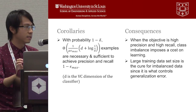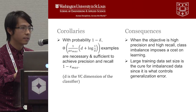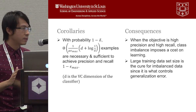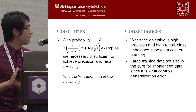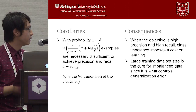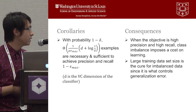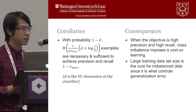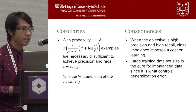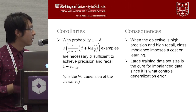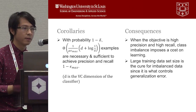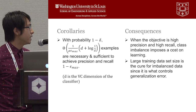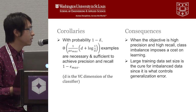The consequence of this theorem is that if we integrate with the VC bound for accuracy, we can conclude that with probability at least 1 minus delta, we need at least (1 / mu * epsilon_max) * (d + log(1/delta)) examples as necessary and sufficient to achieve precision and recall greater than 1 minus epsilon_max, where d is the VC dimension of the classifier. The presence of the term 1/mu is very important because it leads to the consequence that when the objective is high precision and high recall, class imbalance does impose a cost on learning. In order to achieve high precision and recall, it demands the training data size scaled by the imbalance. We conclude that using a large training dataset size is the cure for imbalanced data because it is what controls the generalization error.